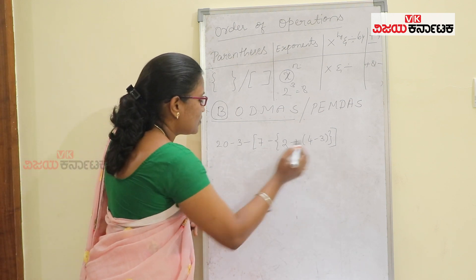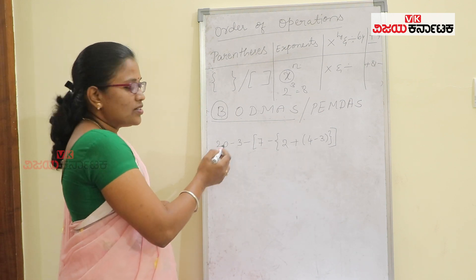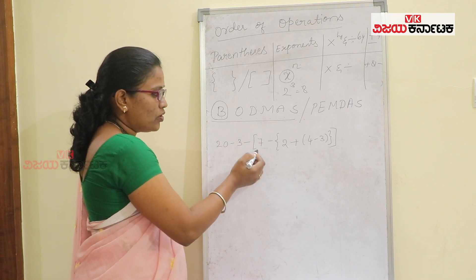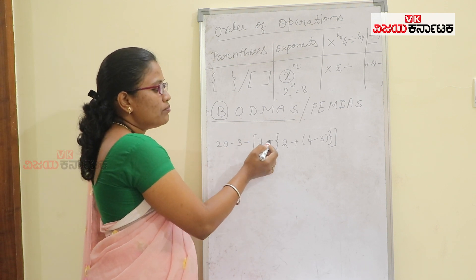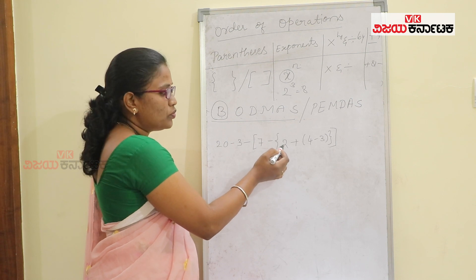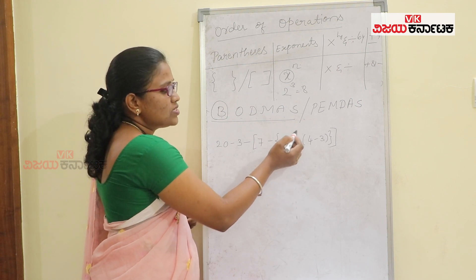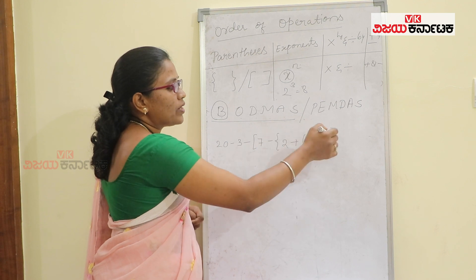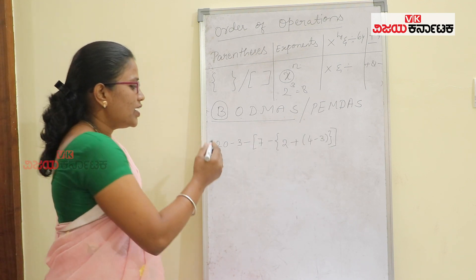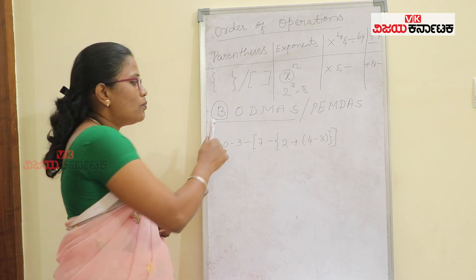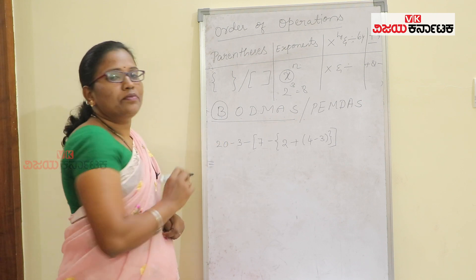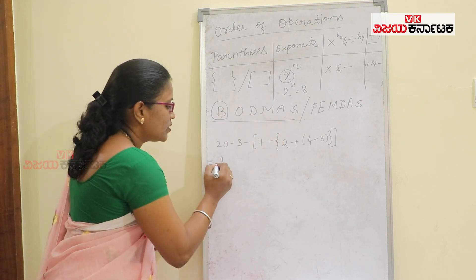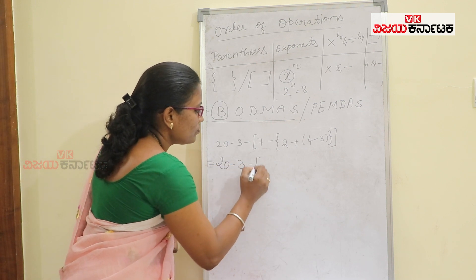Let's take a look at an example. The expression is: 20 minus 3, bracket of 7 minus, again bracket of 2 plus bracket of 4 minus 3. All the remaining brackets will be closed. This is how to simplify this — it is called the BODMAS rule. The first step is the order of brackets.